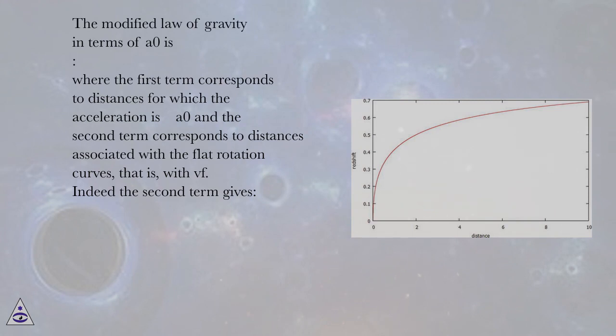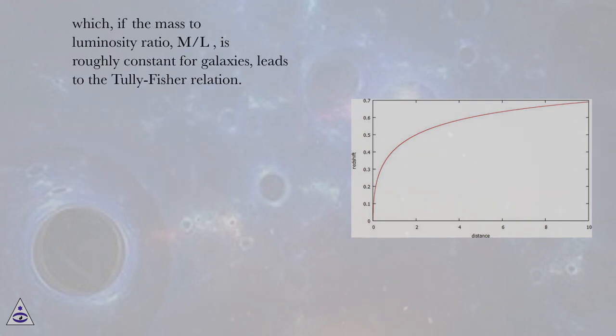Indeed, the second term gives an expression which, if the mass-to-luminosity ratio ML is roughly constant for galaxies, leads to the Tully-Fisher relation.